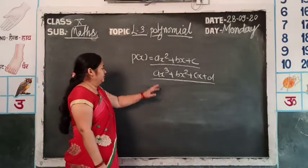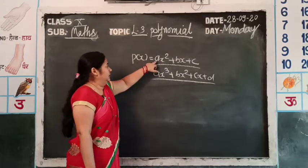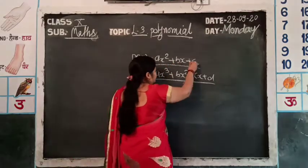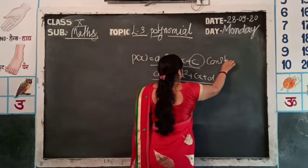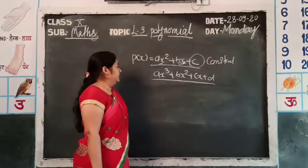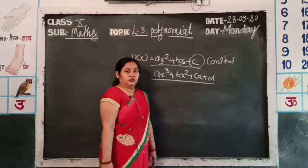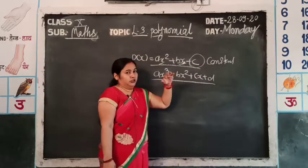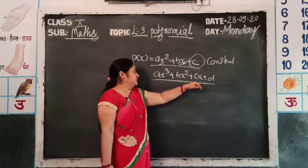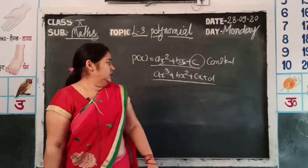Now, the coefficient: x² ka coefficient is a, x ka coefficient is b, and c is the constant — the term without a variable. So in ax³ + bx² + cx + d, d is the constant. The coefficient of x is c, the coefficient of x² is b, and the coefficient of x³ is a.